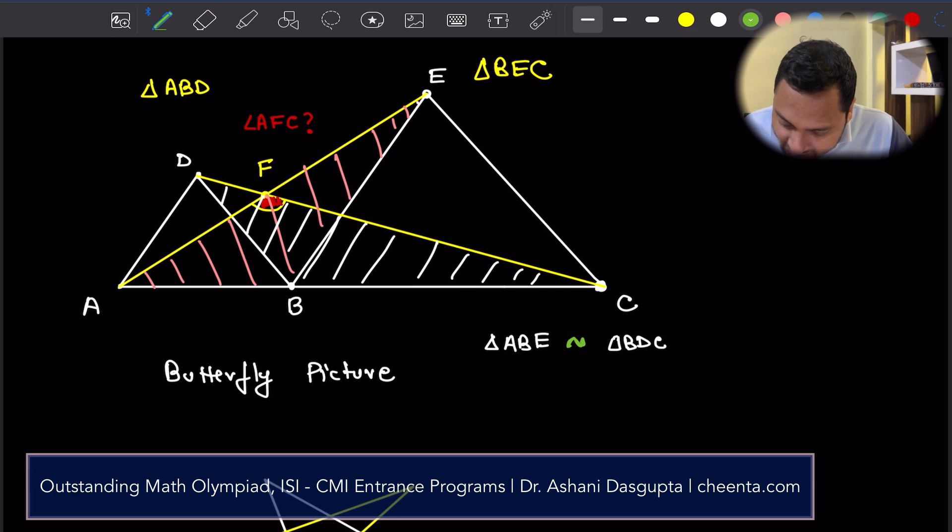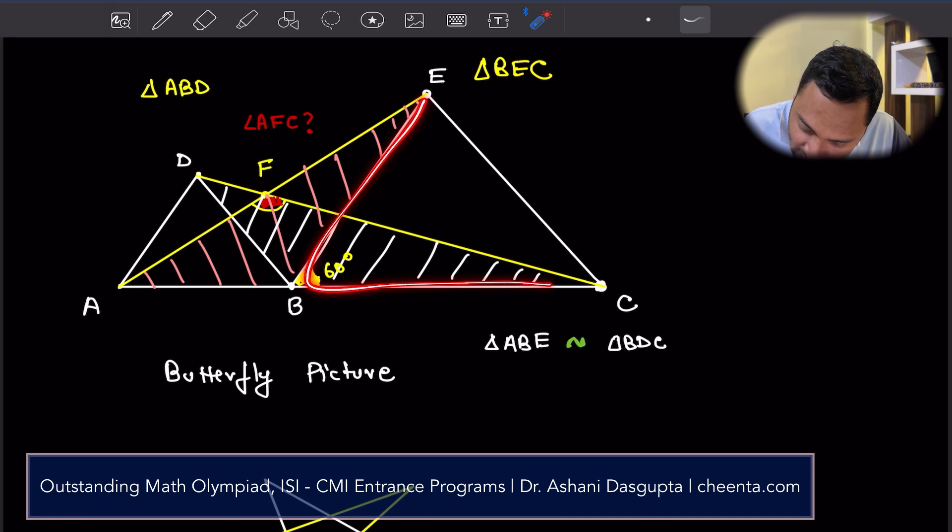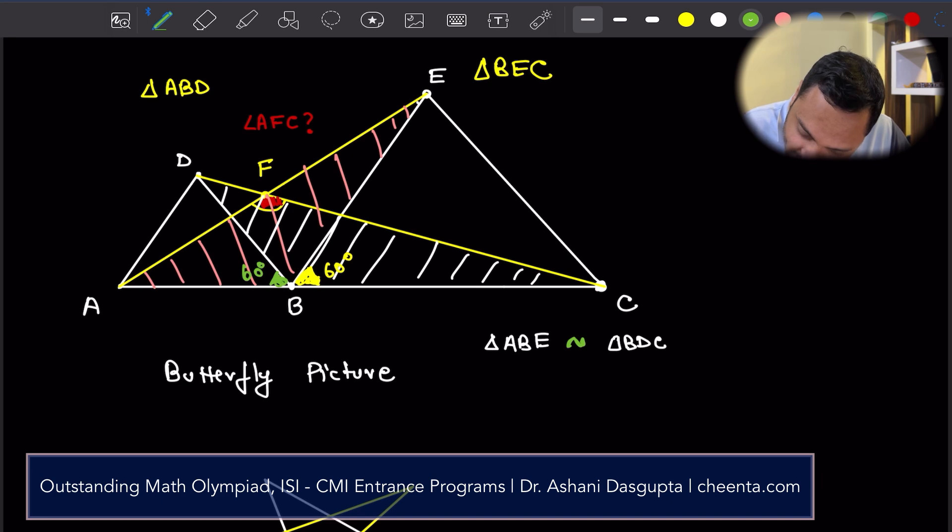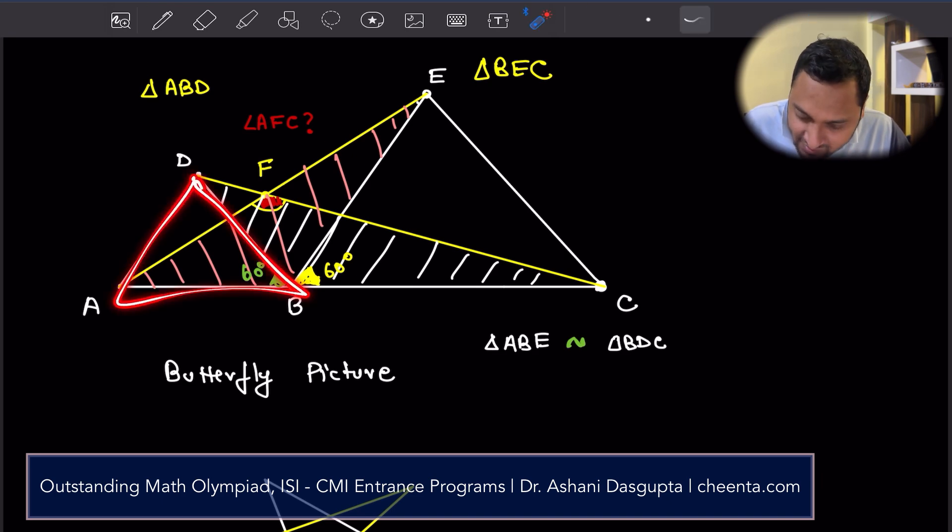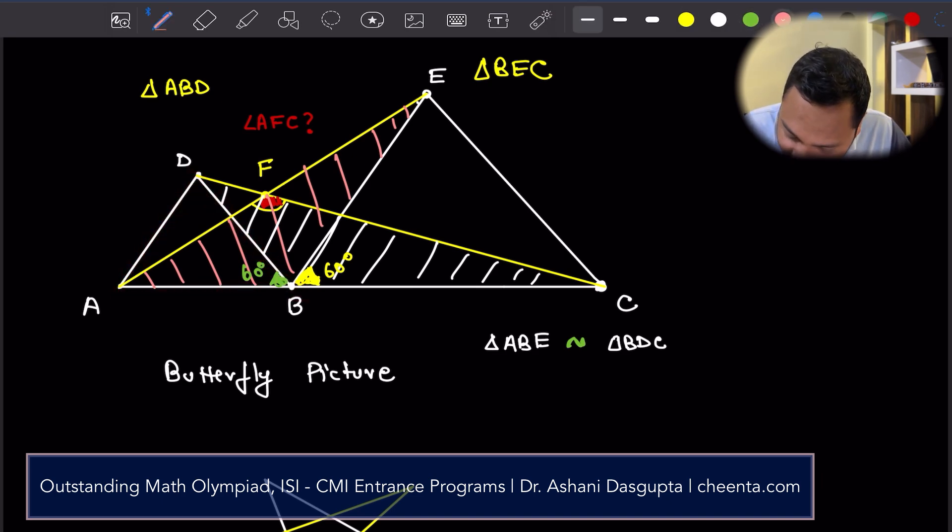Because angle ABD... Let's look at this. This angle is 60 degrees because this is an equilateral triangle. Because this is an equilateral triangle, this angle is 60 degrees. Because this is an equilateral triangle, the remaining angle here must also be 60 degrees. Because the triangles should add up to 180.